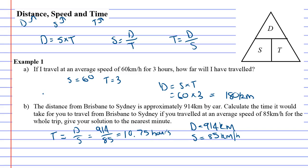So it's going to take about 10.75 hours. All right, now they want you to do it correct to the nearest minute, which actually means they want you to say how many hours and how many minutes. Now it's not 10 hours and 75 minutes, because 75 minutes is actually more than an hour.